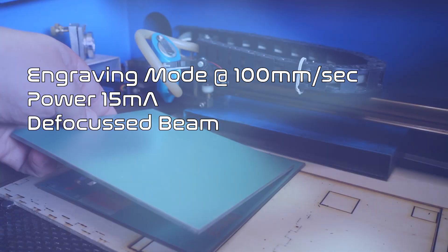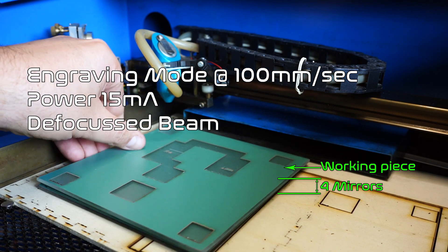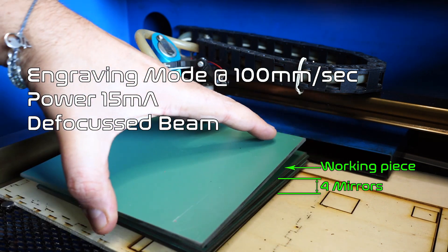So in conclusion for this particular mirror type, my way of engraving it is 100 millimeters per second at 15 milliamps power, an unfocused beam of four mirror heights, scraping off the residue with an exacto.